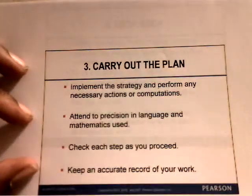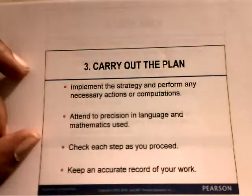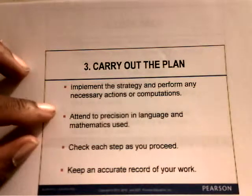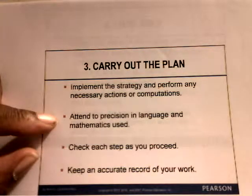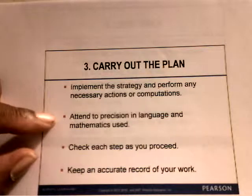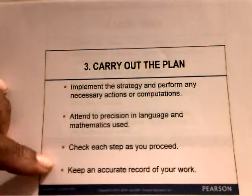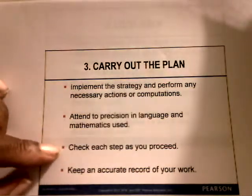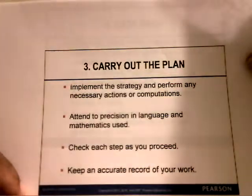Step number three is carrying out the plan. Strategies for carrying out the plan include implementing the strategy and performing any necessary actions or computations. Attend to precision in language and mathematics used. Sometimes the wording in a problem may ask you to write it using mathematical terms. Then check each step as you proceed and keep an accurate record of your work. If you make a mistake, go back and correct it as quickly as you can.